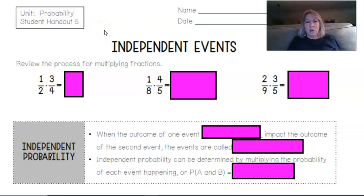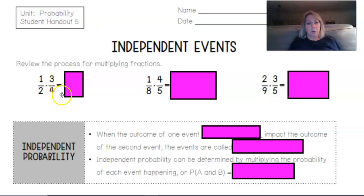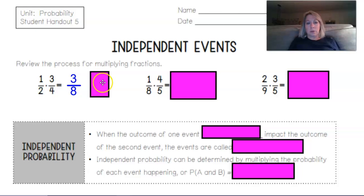In order to think about multiplying probability fractions, we're going to review the process for multiplying fractions. So what is 1/2 times 3/4? 1 times 3 is 3, and 2 times 4 is 8. So that answer is 3/8.